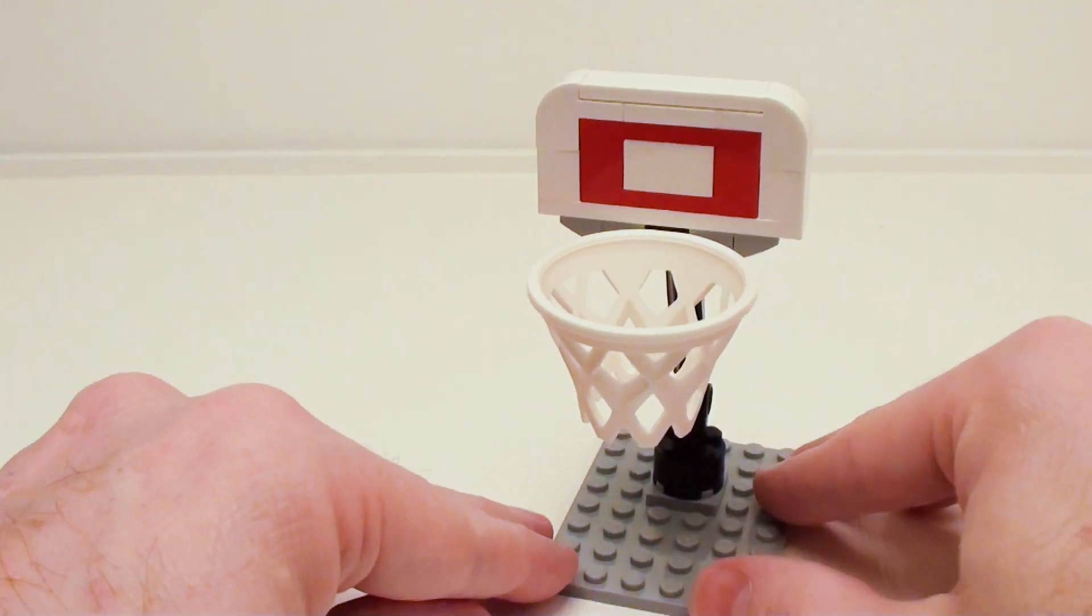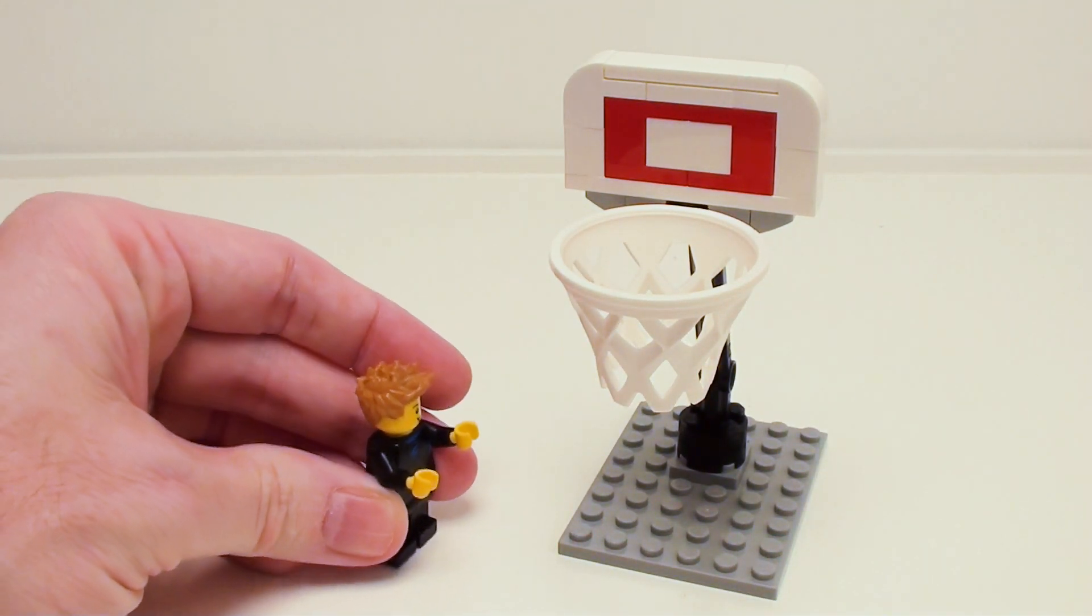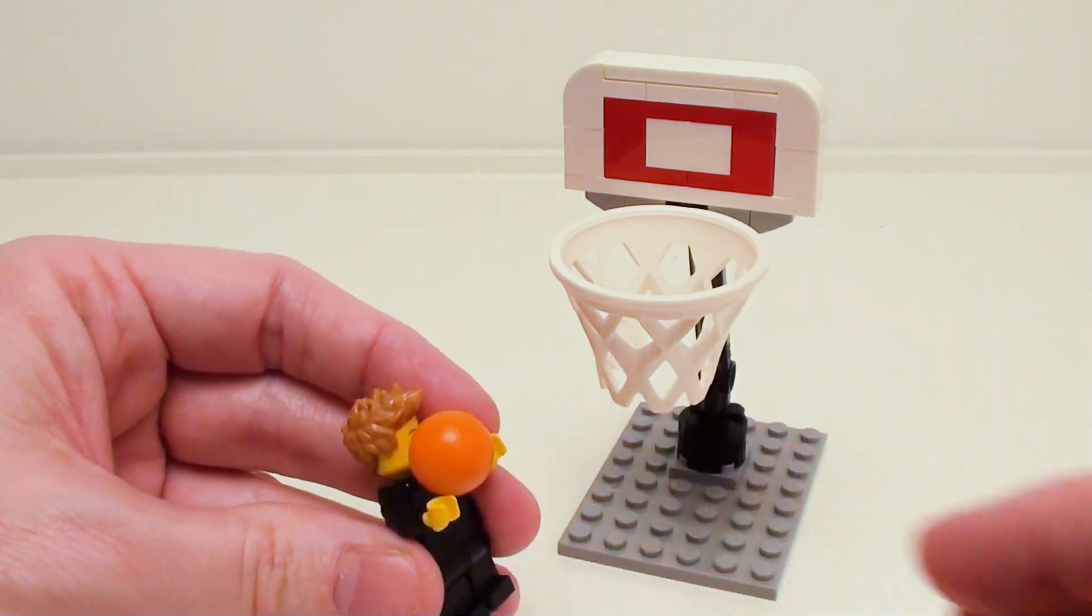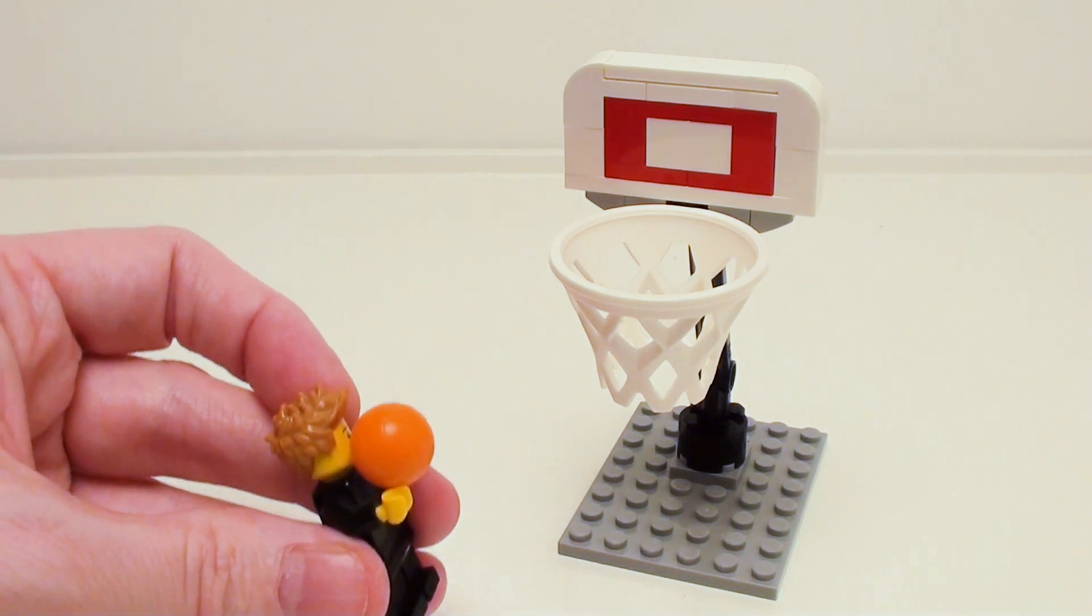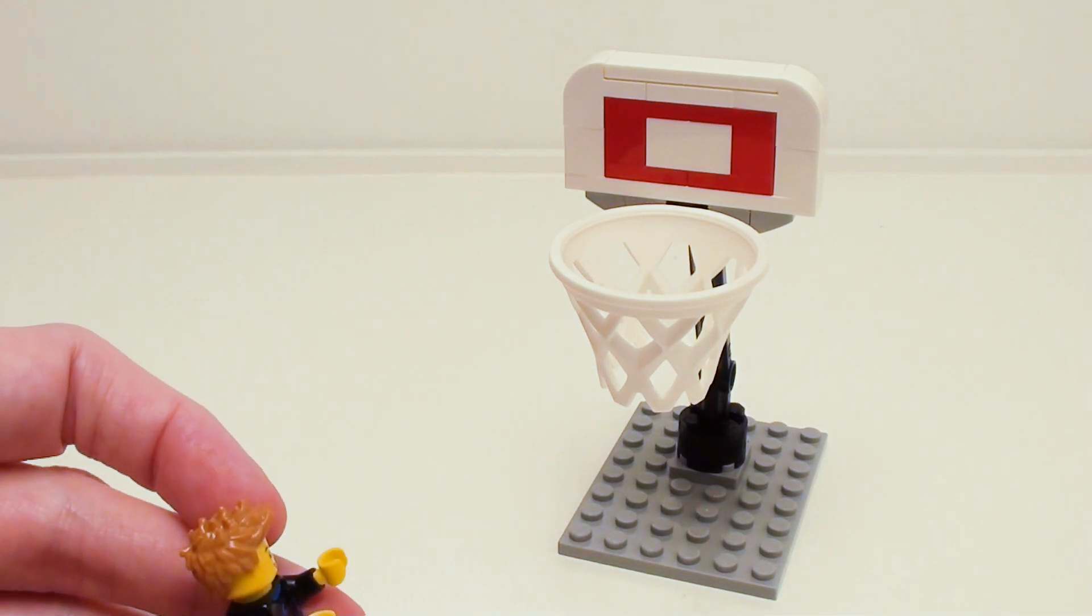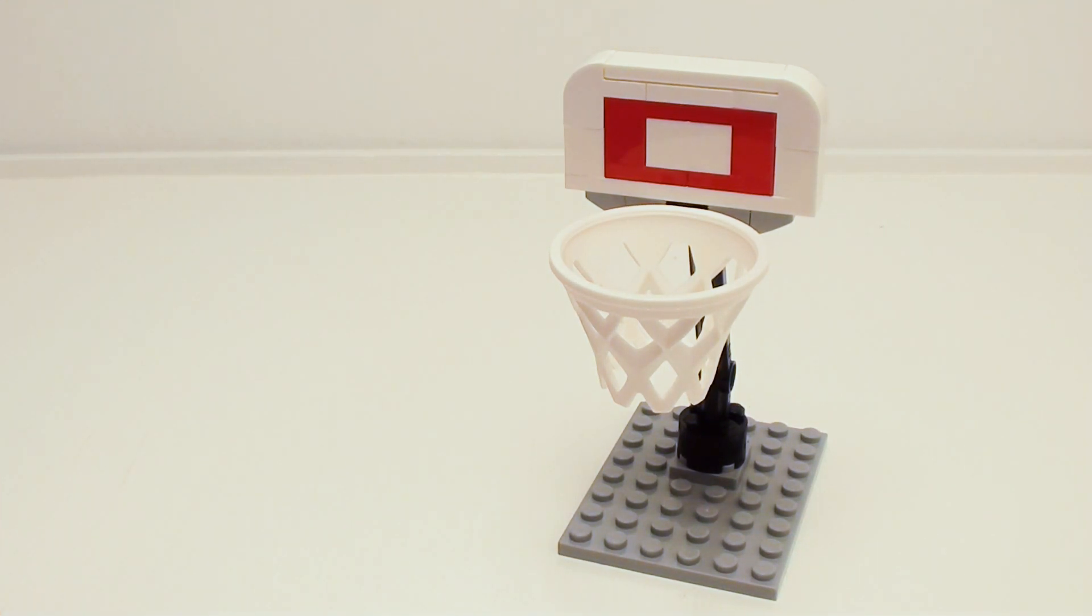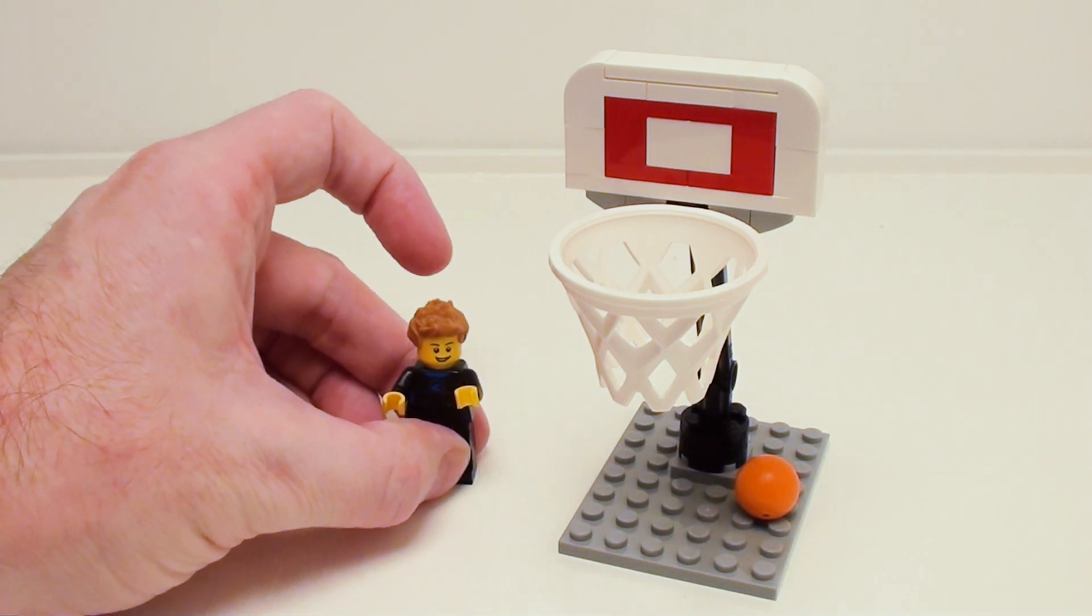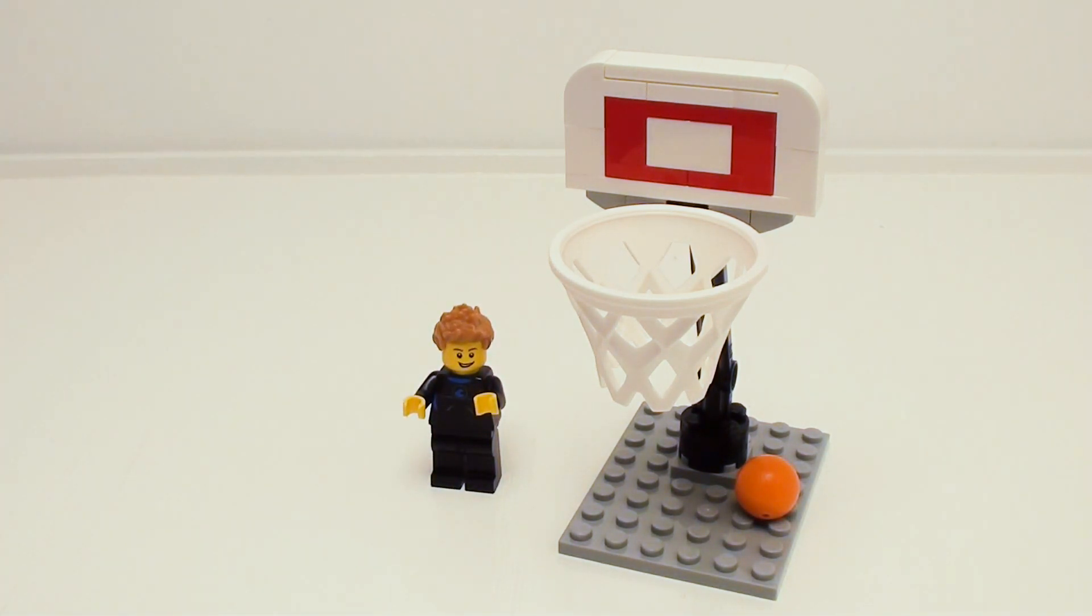So here we have Jay the Surfer. He does fit underneath and can also hold on to a basketball. Let's see if he can make a shot here. Well no he didn't, but I'm going to give it a shot now. He does pretty well. This can be used for any basketball theme. You can make a complete basketball court and move forward!